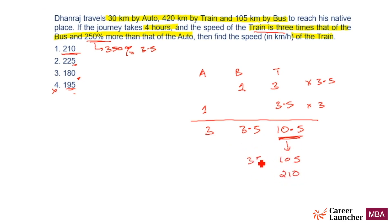If the speed of the train is 210, this 105 means 35 and 30. So if the speed of train is 210, speed of bus will be 70 kilometers per hour and speed of auto will be 60 kilometers per hour. Let's verify if the time taken is 4 hours or not.